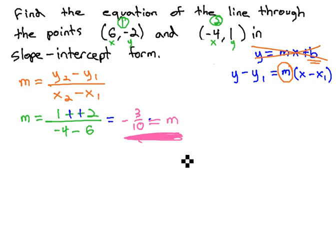We can now use our slope and either point in order to find the equation of the line. Let's just use the first point. We could use either point. We'll get the same final result. We're now ready to go back to point-slope form, which is y minus y1 equals m times x minus x1.